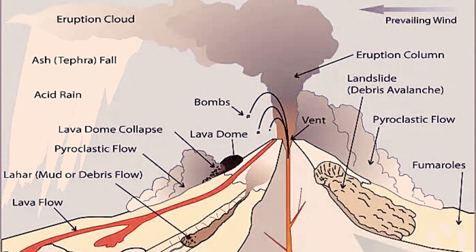On exit, volcanic bombs cool down and become extrusive igneous rocks. Lava dome: when lava is too thick and sticky, it piles up around the vent and forms a dome. These circular mounds protrude from volcanoes because of the slow release of viscous lava. Eruption column: these clouds of heated ash and tephra are released from a vent during an explosive volcanic eruption.